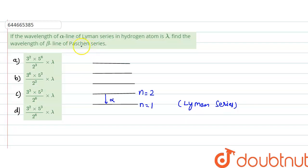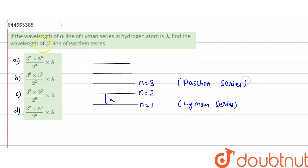For the Paschen series, the transition ends at n equals to three. This is our beta line, so for the beta line it would be coming from n equals to five — from n=5 down to n=3.